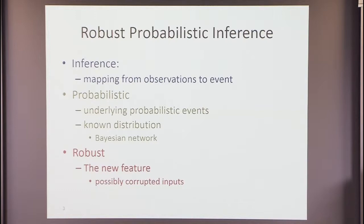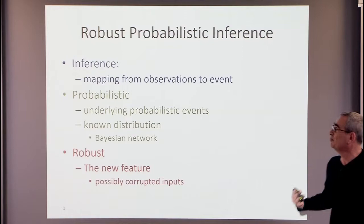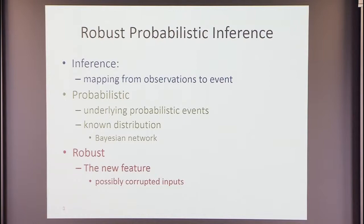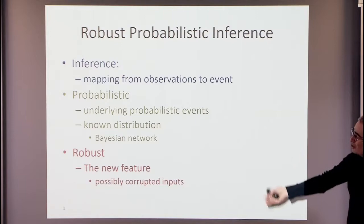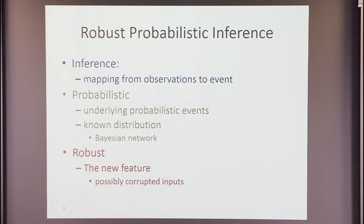Let's start with what we mean by robustness. Robust probabilistic inference — we should probably read it in Hebrew, from right to left. Inference is a mapping from observation to an event. Probabilistic means there is an underlying stochastic distribution that controls the event, and we would like to predict the probability of an event. As a basic example, think about a Bayesian network: you observe some of the nodes and given those observations, predict the outcome. Those two things are classical, going back at least to the 1950s. What we discuss today is a new feature: robustness.